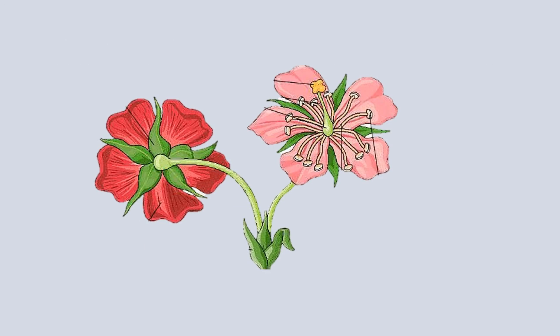Bract: The leaf-like structure in the axil on which a flower develops is called Bract. Petzal: The stalk of a flower is called the Petzal. A flower without a Petzal is called a sessile flower.